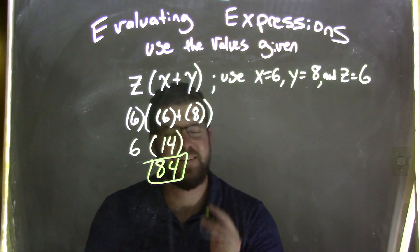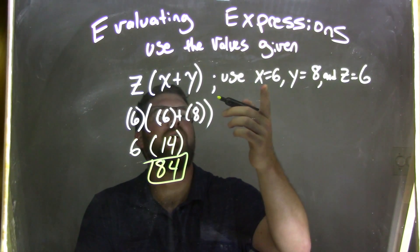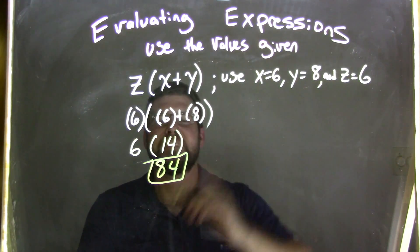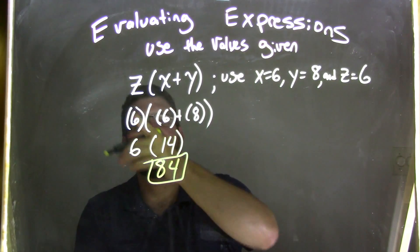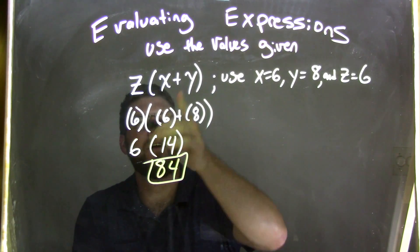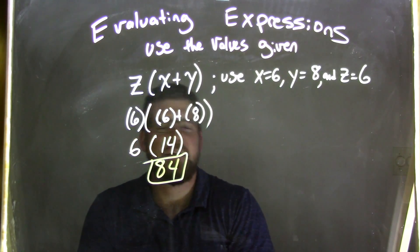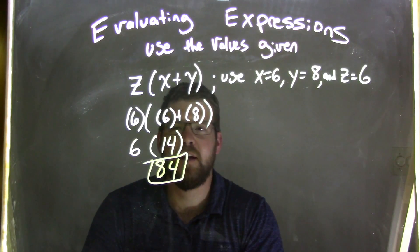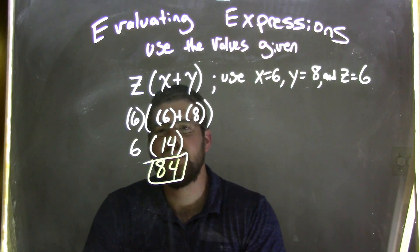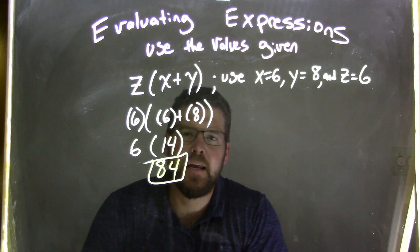Let's recap. We have x equals 6, y equals 8, and z equals 6. We substitute them in: 6 in for z, 6 in for x, y is 8. We add 6 plus 8 together to get 14. And then lastly, 6 times 14 is 84.